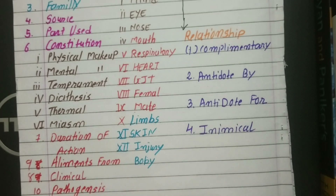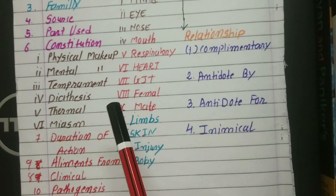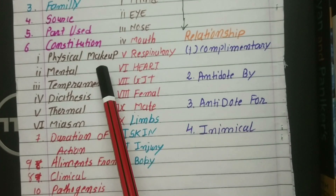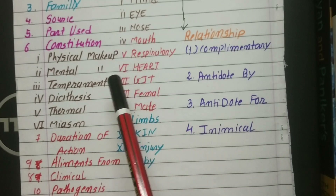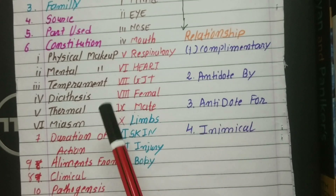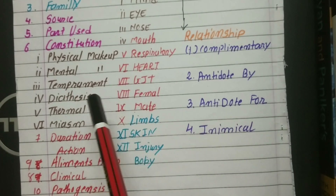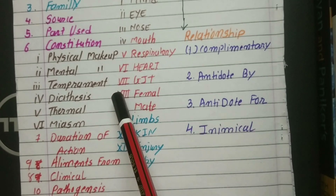Physical makeup describes the patient physically — how they look, their hair, their skin, whether they are red or pale. Mental makeup covers things like whether the patient is very irritable, nervous, or jealous. Then we have temperament — what is the nature of the patient, like whether they are nervous, irritable, jealous, or peevish.